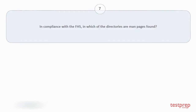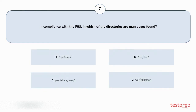Question number 7: in compliance with the FHS, in which of the directories are man pages found? The correct answer is option C.